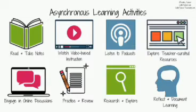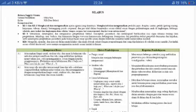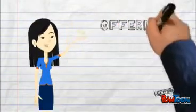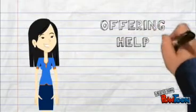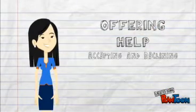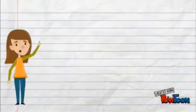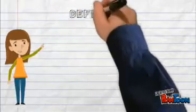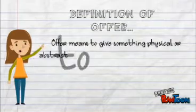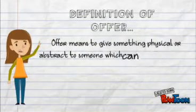The first topic is offering help, accepting, and declining. Definition of offer: offer means to give something physical or abstract to someone, which can be taken as a gift or treat. Offer also means to give help — it can be taken or refused.